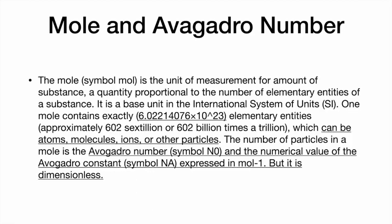Next, mole and Avogadro's number. The mole (symbol: mol) is the unit of measurement for amount of substance — a quantity proportional to the number of elementary entities of a substance. It is a base unit in the International System of Units. One mole contains exactly 6.02214076 × 10²³ elementary entities, which can be approximately written as 600 billion trillion. These entities can be atoms, molecules, ions, or any other particles. The number of particles in a mole is the Avogadro number, indicated by N₀.